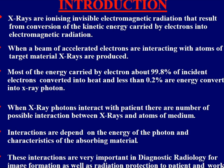X-rays are a part of the electromagnetic radiation spectrum. The wavelength of x-rays varies from 0.01 nanometers to 10 nanometers. X-rays are produced when a beam of accelerated electrons interacts with the atoms of target materials. Of the energy carried by the incident electron, 99% is converted into heat energy, and only about 0.2% of the incident electron's energy is converted into the energy of the x-ray photon.